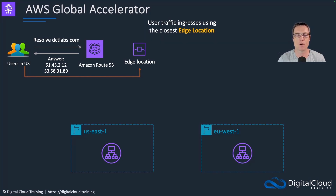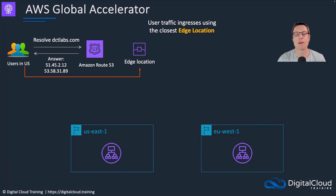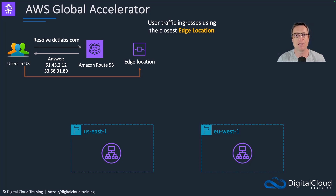These users are somewhere in the US, so they get directed to an edge location somewhere close to where they are physically located. That means the shortest distance possible to get into the AWS global network. Once they're in the AWS global network, the latency is more consistent and the bandwidth is good — that's why we want to leverage the AWS global network.